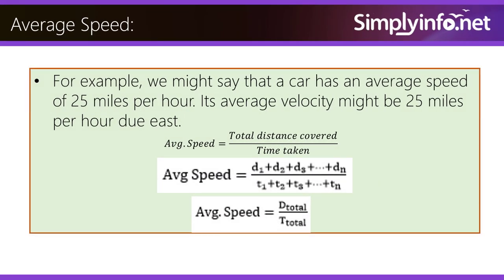For example, we might say that a car has an average speed of 25 miles per hour. Its average velocity might be 25 miles per hour due east.